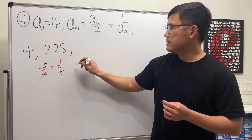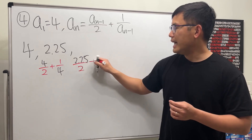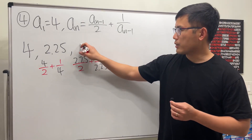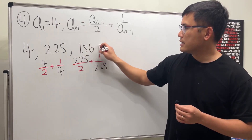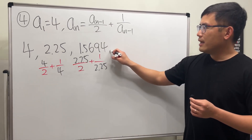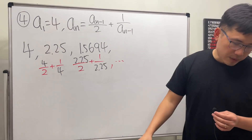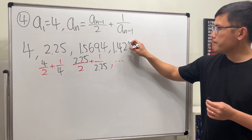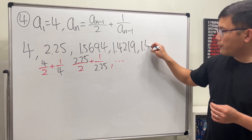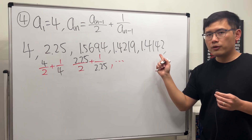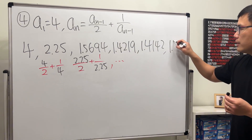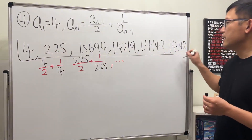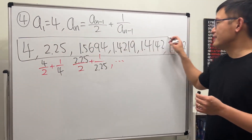Continuing: we do 2.25 divided by 2, and then add it with 1 over 2.25. Use a calculator — that gives 1.5694, rounded to 4 decimal places. Continuing with the same process, the next number is 1.4219, and then 1.4142. Once you reach 1.4142, if you keep going, you will still end up with 1.4142 — this is the limit of the sequence. If you recognize what this number is, leave a comment down below!